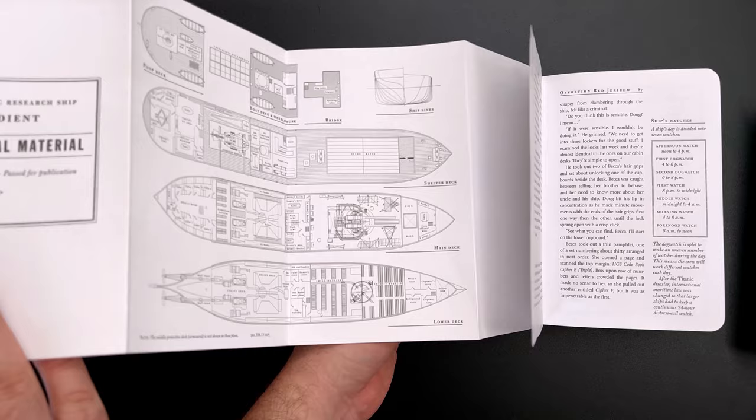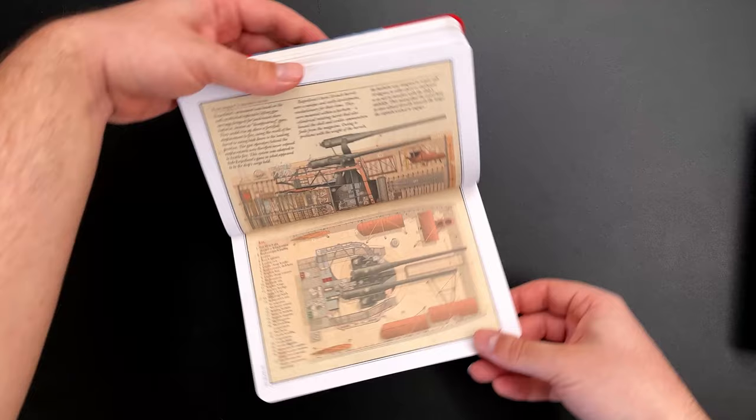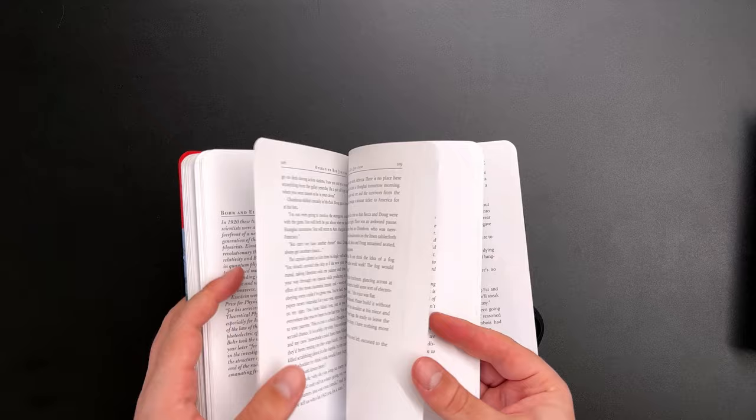These supplements aren't all visual though. There are also more traditional footnotes and sidebars that add extra information to the main text. Like when a character is introduced or a historical event or technical concept is referenced, whether real or made up, it's explained in these little sidebars.